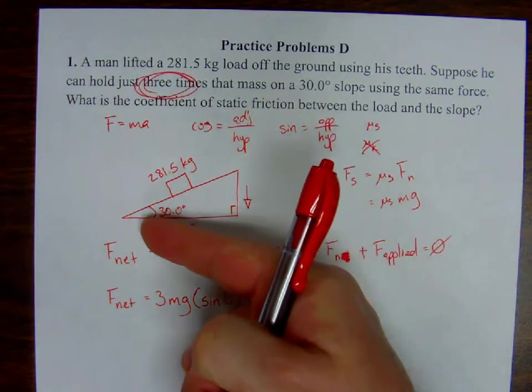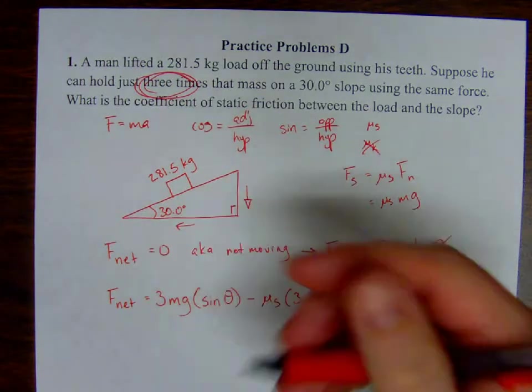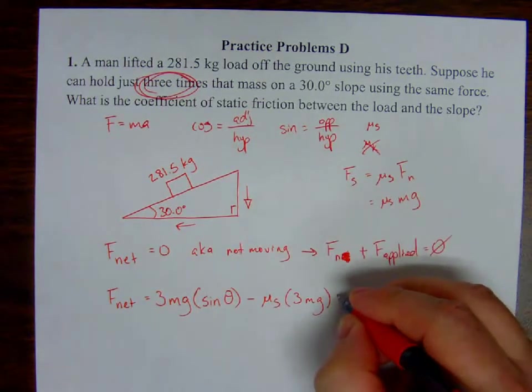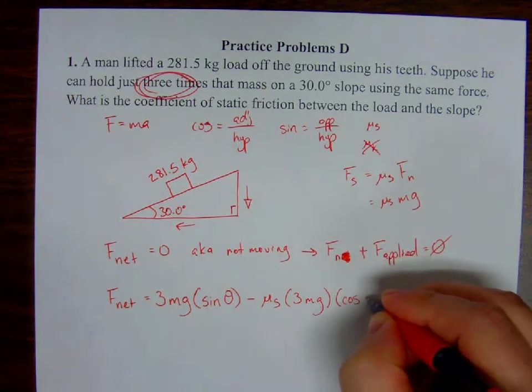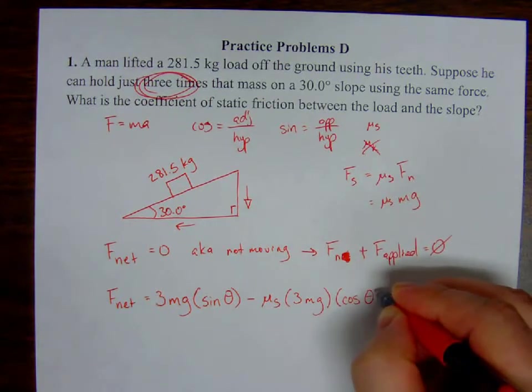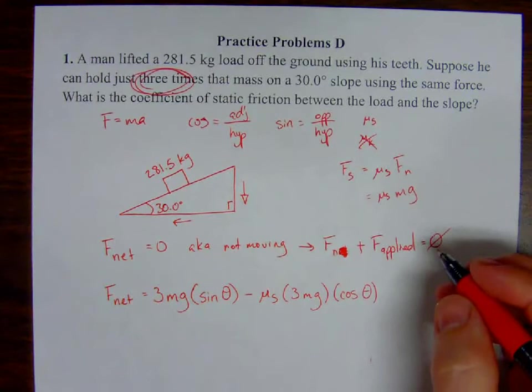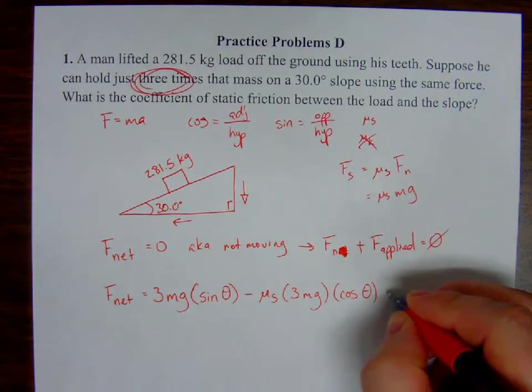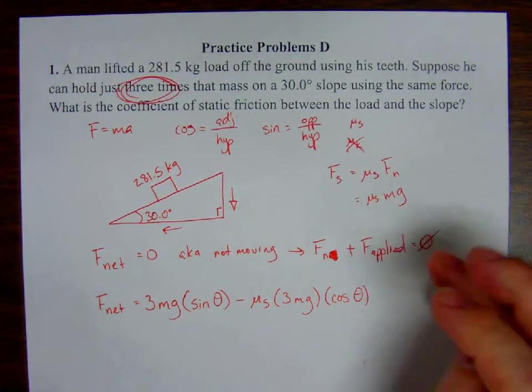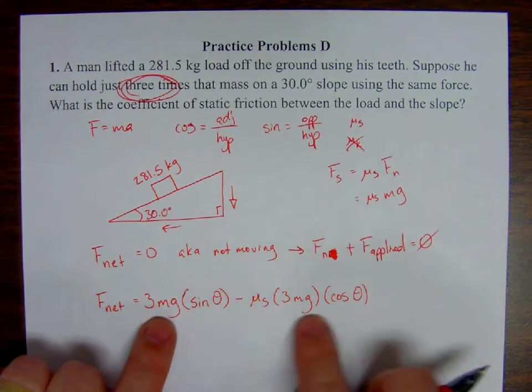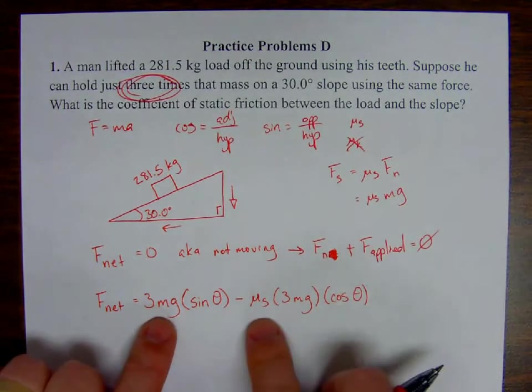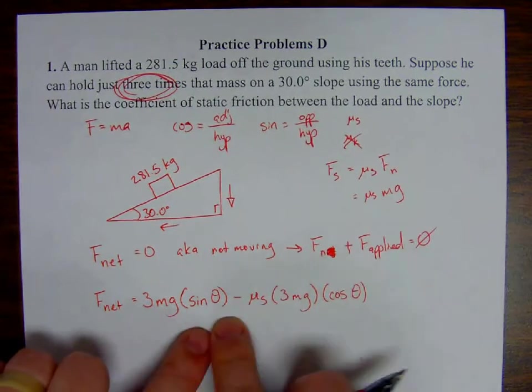And then, here's pretty much our net force. This is what we're talking about. Now, that is going to be completely opposed by the force applied, so that when we add everything up, it's zero. Remember? Because it's got to be force applied.